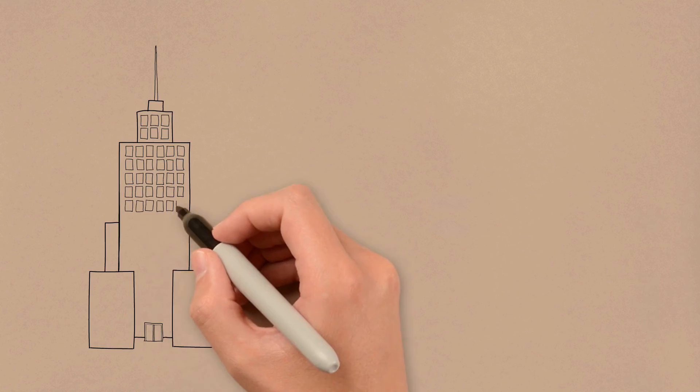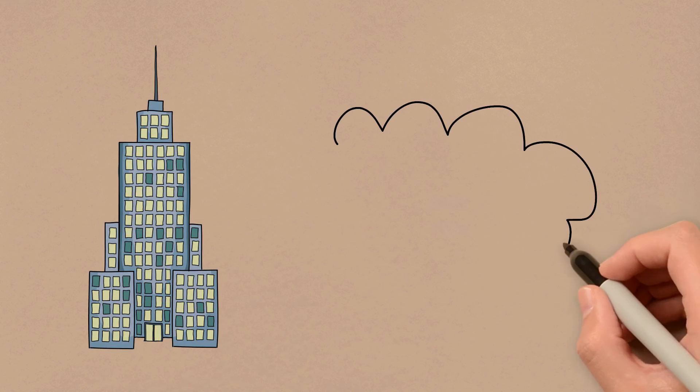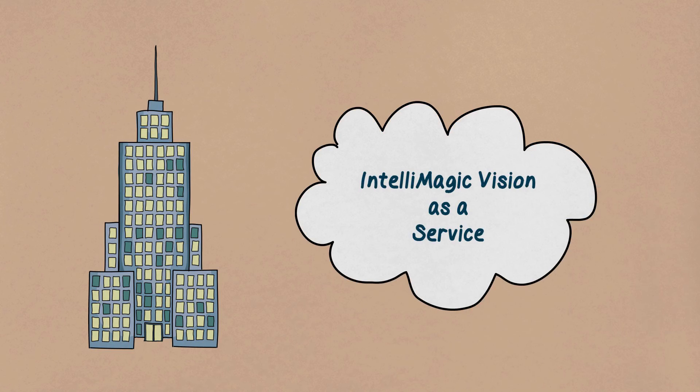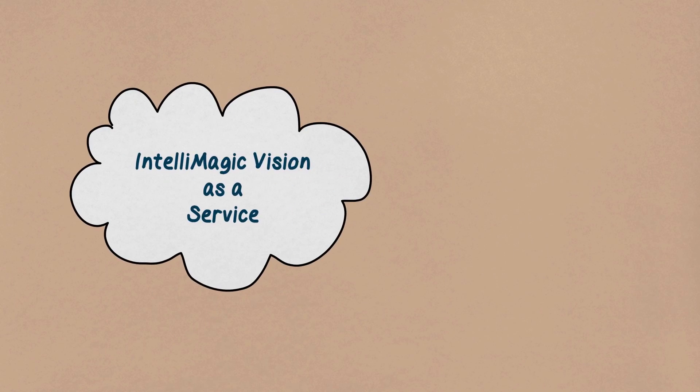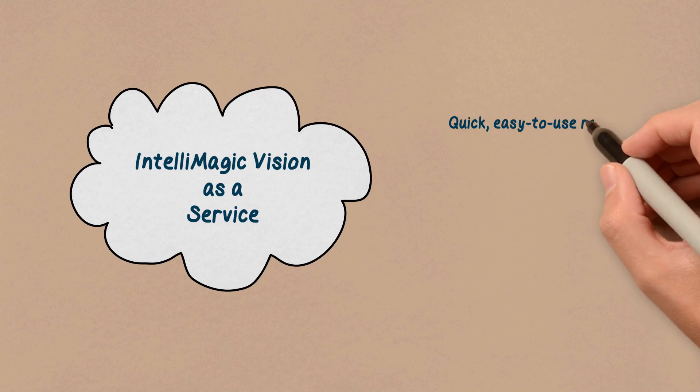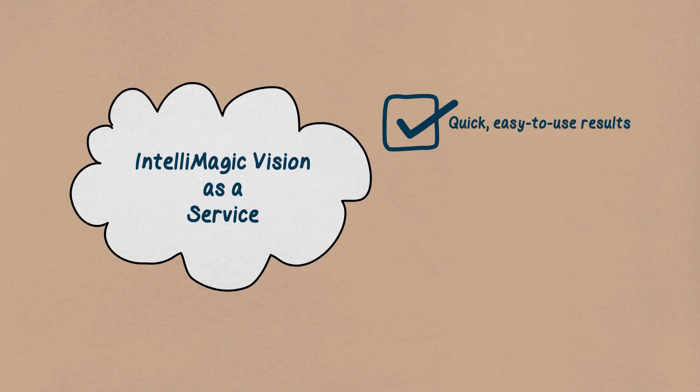You can install our IntelliMagic Vision software on-site, but this problem of how to generate valuable intelligence out of the data is one that lends itself very well to the software-as-a-service model. In as little as 30 minutes after starting to send your data to our services platform, you can start receiving valuable intelligence about specific threats to availability in your storage infrastructure.